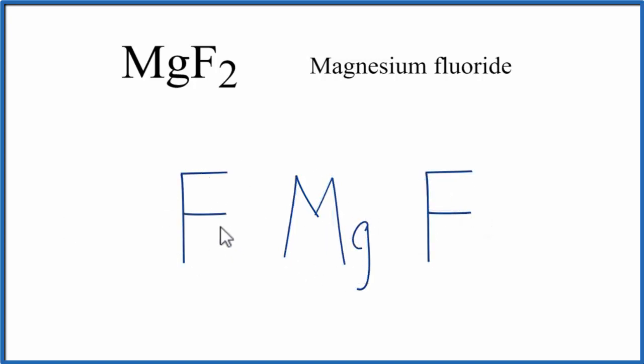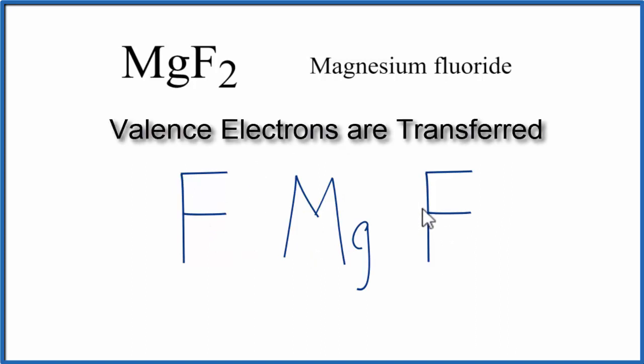Magnesium, that's a metal, and then fluorine, that's a non-metal. So we have a metal bonded to non-metals. That makes this an ionic compound.